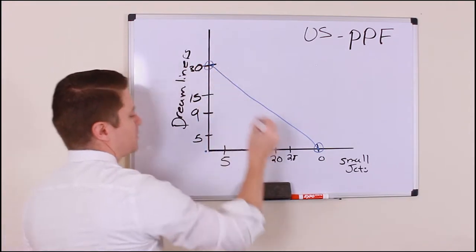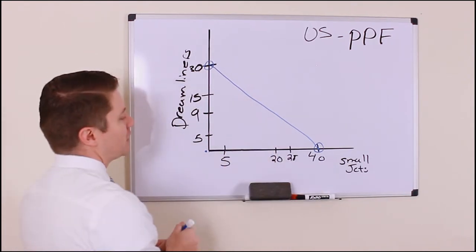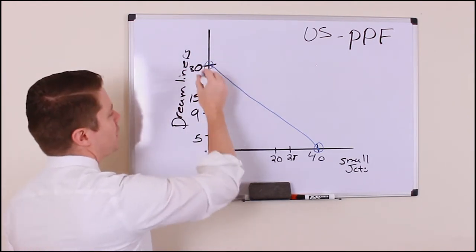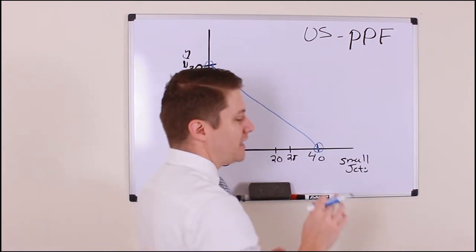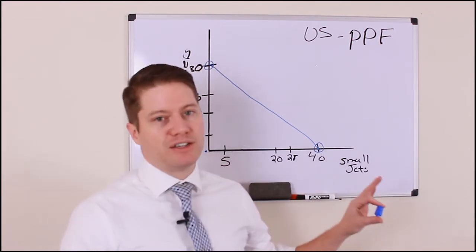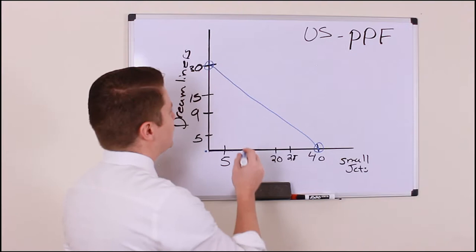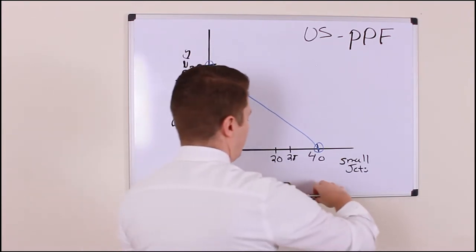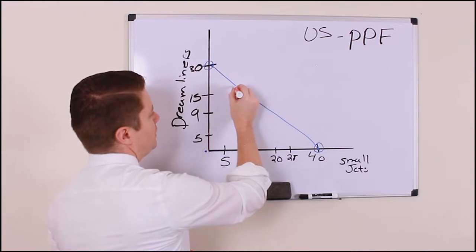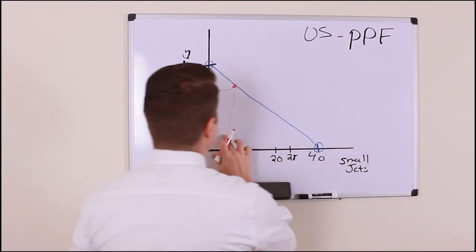On the other extreme, the country can produce just dreamliners — and according to the book that extreme is 30 dreamliners, meaning they can no longer produce any small jets. What most countries do when they're not trading is try to find a happy median. At this point we're pretending they're not trading and not yet comparing two countries, but we'll get there.